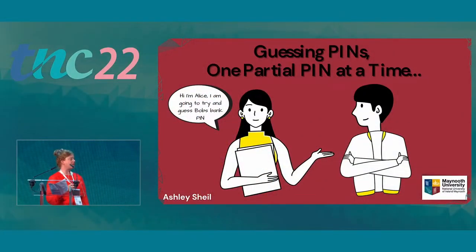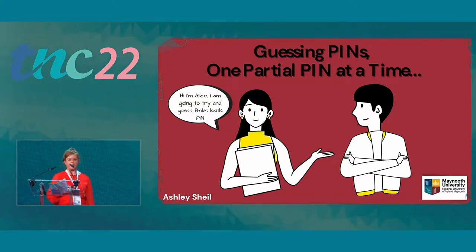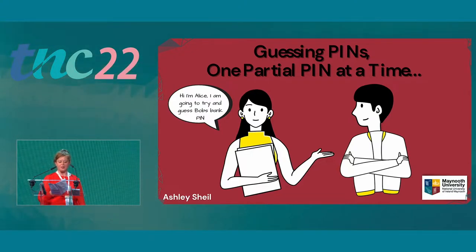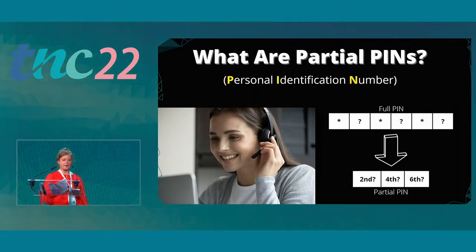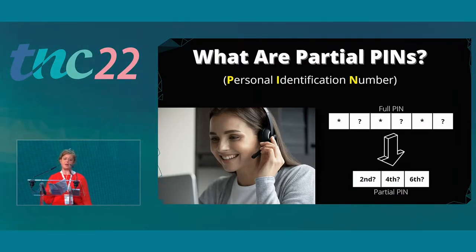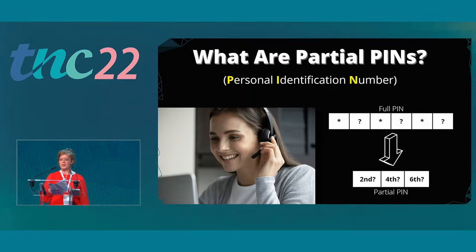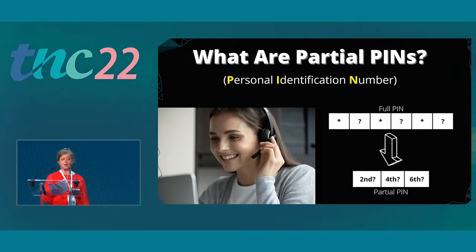Picture this scenario: we have Alice and Bob, and Alice is not the ideal housemate because she wants to hack into Bob's bank account. She knows his phone password, and whenever she gets the chance she's going to try to log into Bob's banking app by guessing his partial PIN. Partial PINs are when you are asked for a smaller set of random unordered digits from your full PIN, and they appear to be mostly used in the UK and Ireland. Originally they were used for phone banking, but with the emergence of online banking they no longer serve the purpose of their original role, and their security was brought into question.